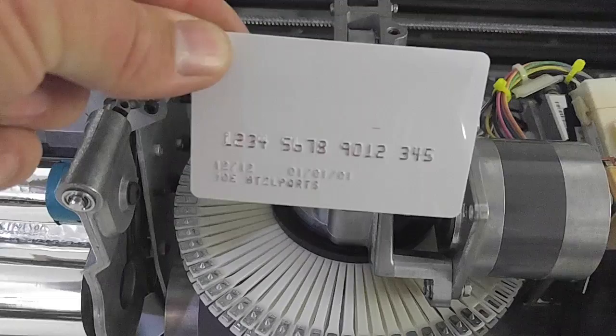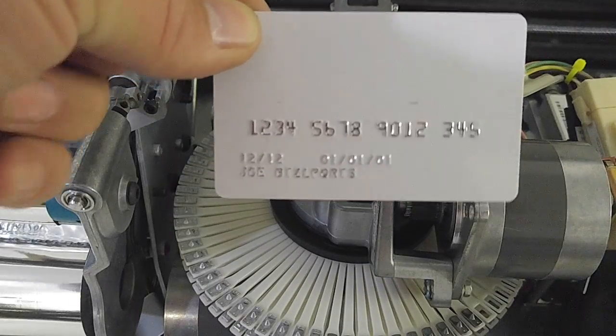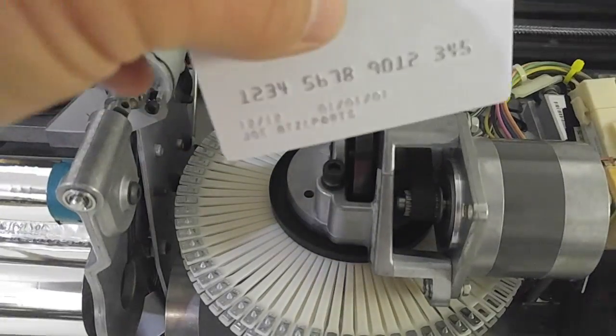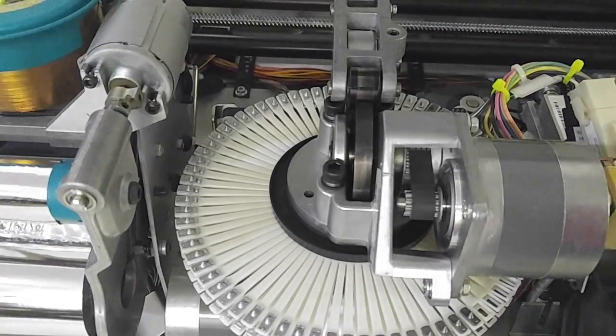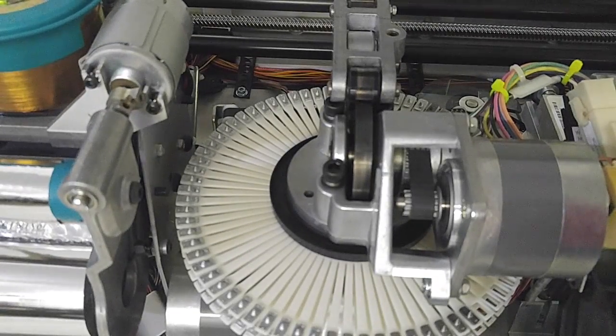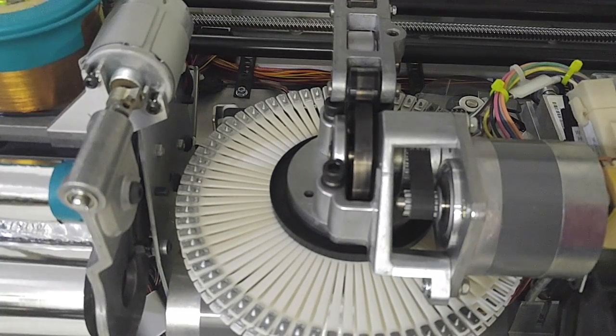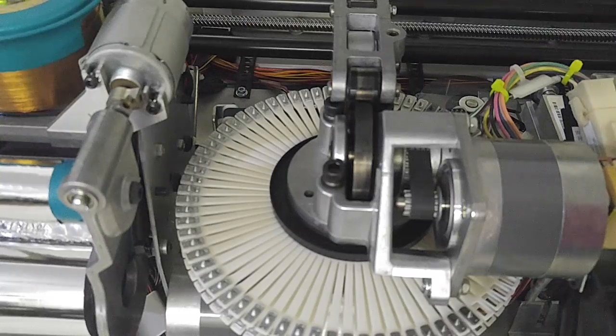So with that test, you can test the topping, the embossing, and the encoding, which on this particular unit, the only thing that it didn't test was the rear indent, which we can do another test card for that. Or if you happen to have a model with a smart card encoder, which is very rare, but if you did, there's a test for that as well.